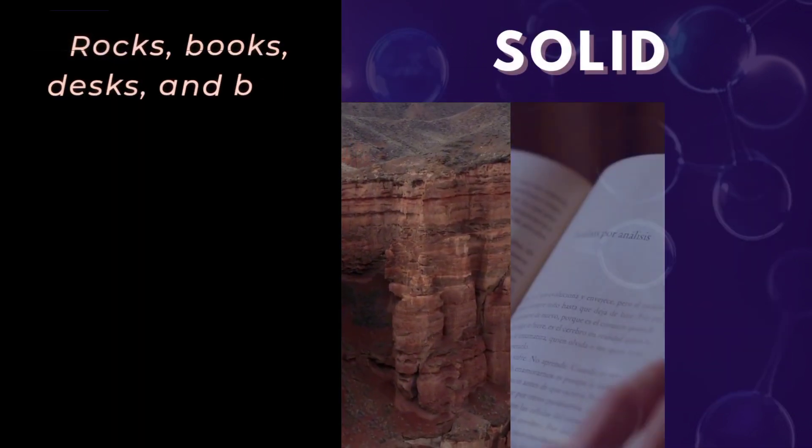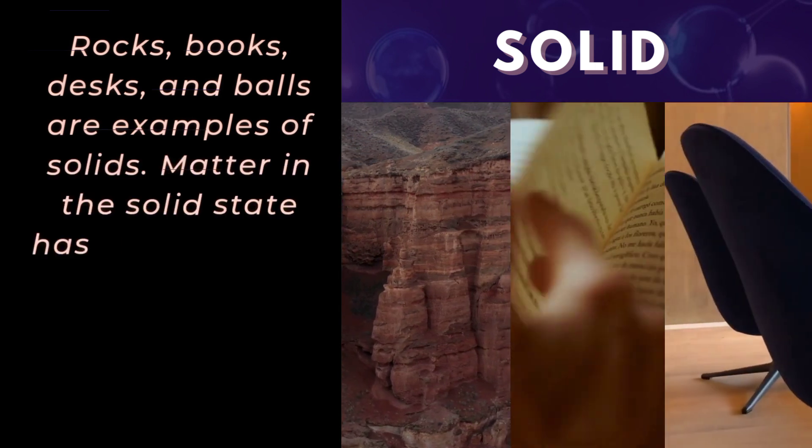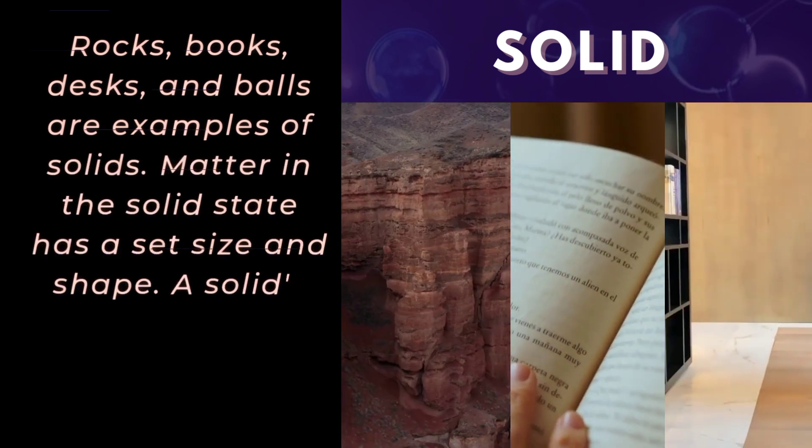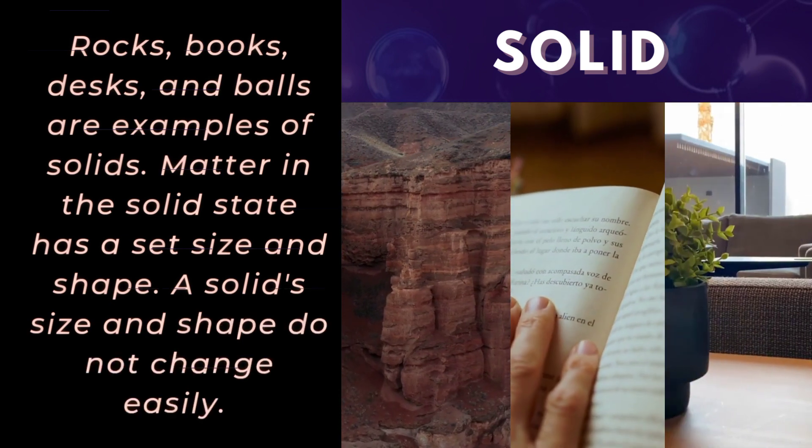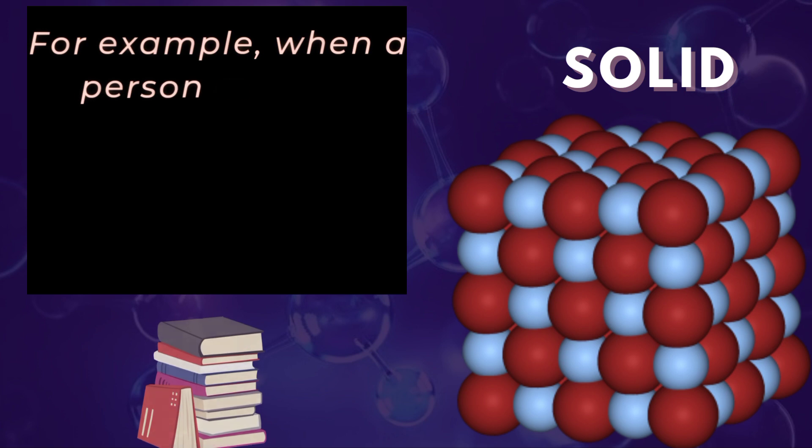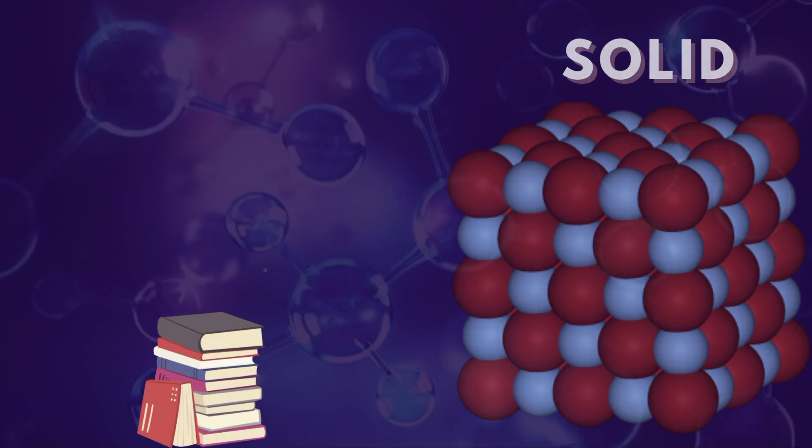Rocks, books, desks, and balls are examples of solids. Matter in the solid state has a set size and shape. A solid's size and shape do not change easily. For example, when a person moves a book from a smaller to a bigger box, the book looks the same.